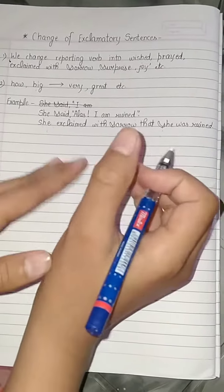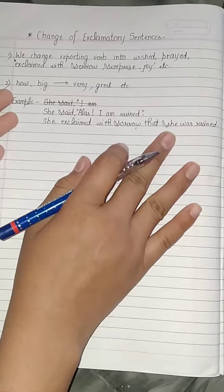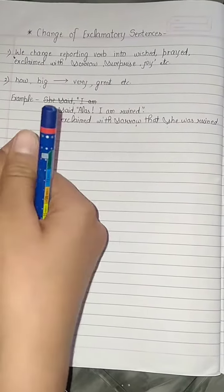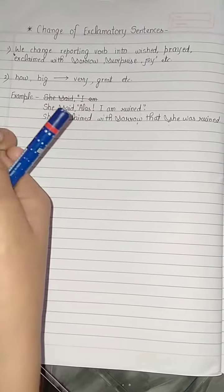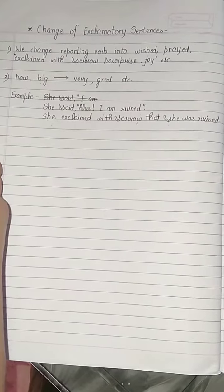So, 'She said alas I am ruined' becomes 'She exclaimed with sorrow that she was ruined.' I hope you liked this part. If you liked this part, then please like the video, share the video, and subscribe to our channel. Thank you.